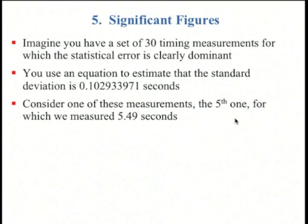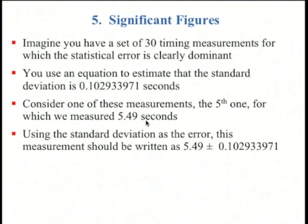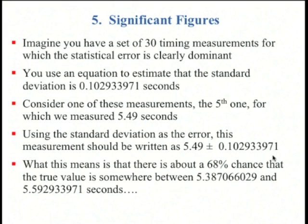Let's consider one of those measurements. Maybe the fifth time we measured the time we got 5.49 seconds. The error, since this is a statistical error, we use the standard deviation. So we'd write 5.49 plus or minus 0.102933971. What does that mean? It means that every time we measure it, there's about a 68% chance that the true value is somewhere between 5.49 minus this value and 5.49 plus this value. Is this right? Is this a good way to write this? No!